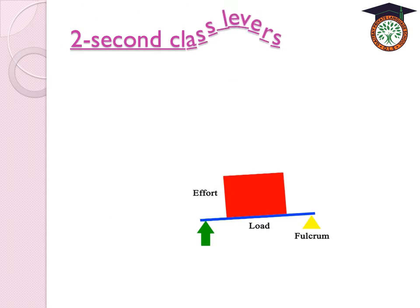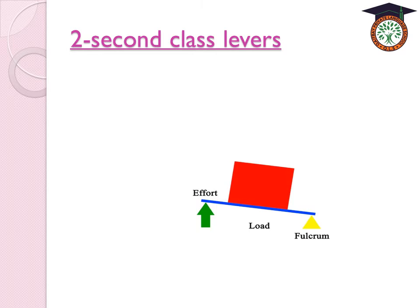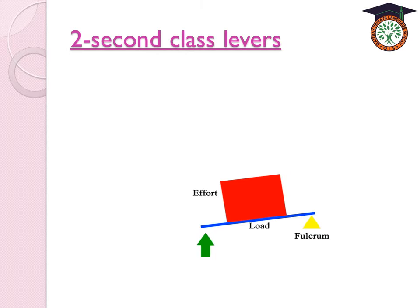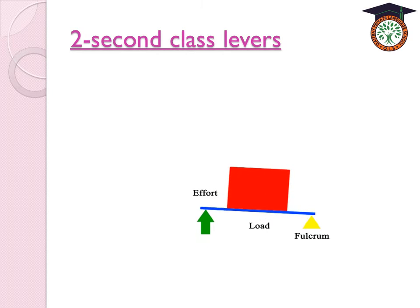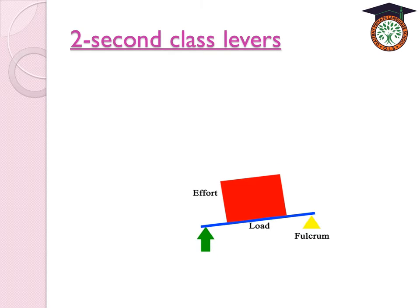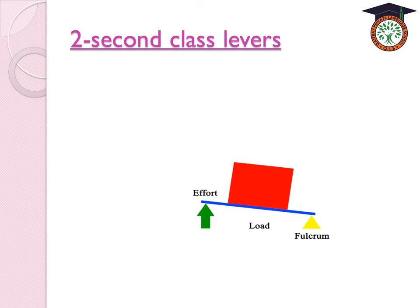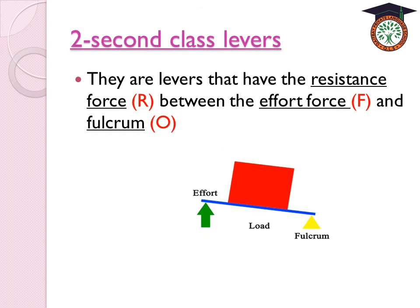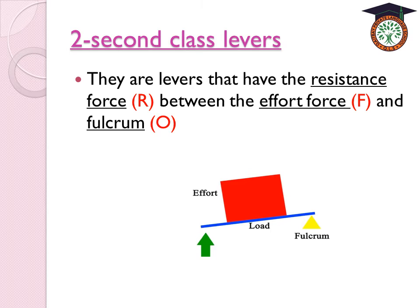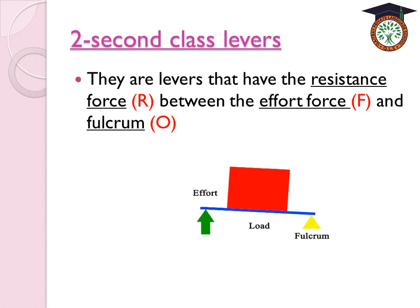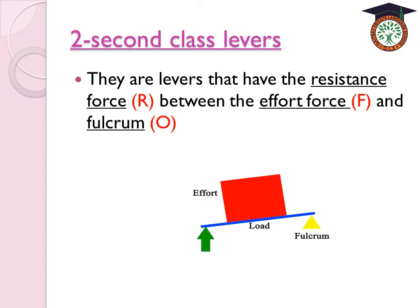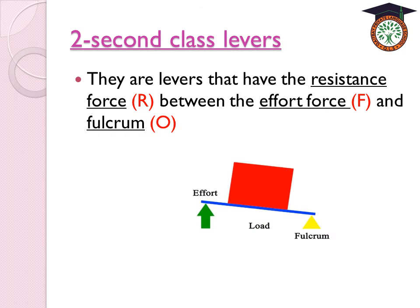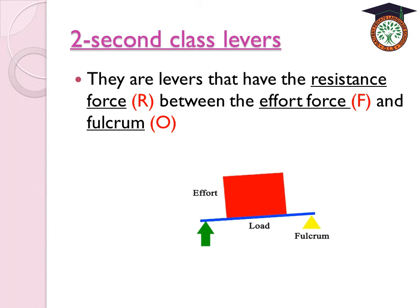Now the second-class levers. As the three classes differ in the position of fulcrum, effort force, and resistance force, in second-class levers the resistance force is between the fulcrum and the effort force. Second-class levers have the resistance force between the effort force and the fulcrum. The red point (resistance force) lies between the green (effort force) and the yellow (fulcrum).